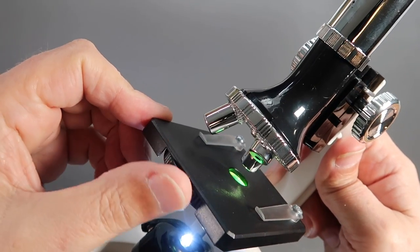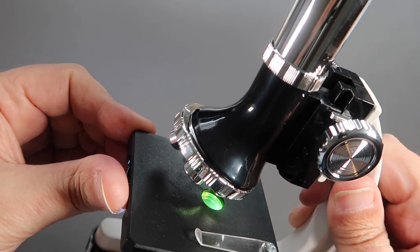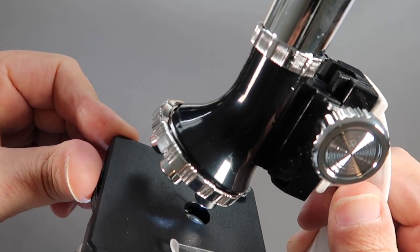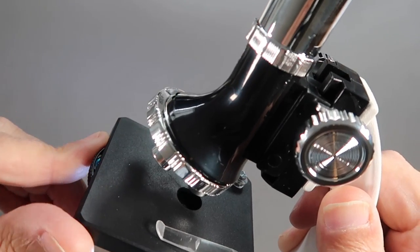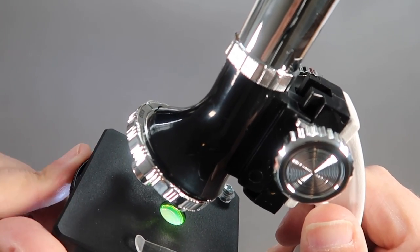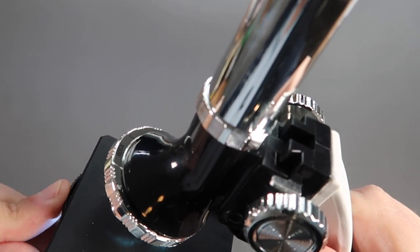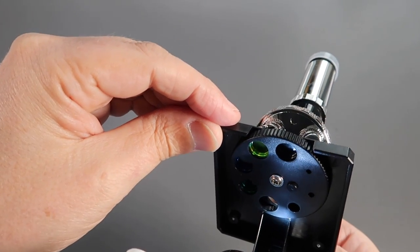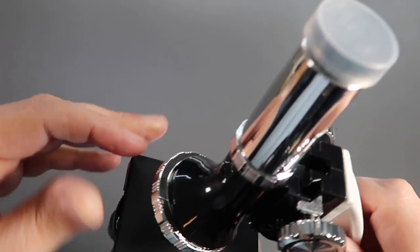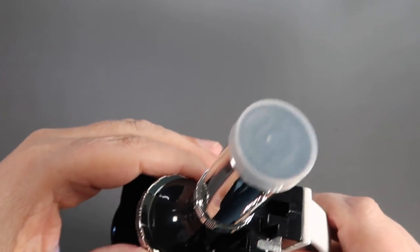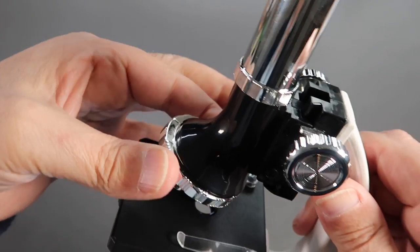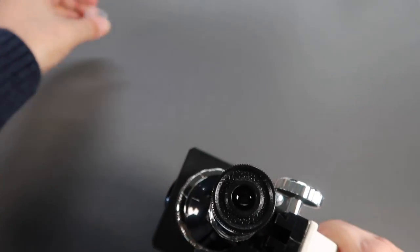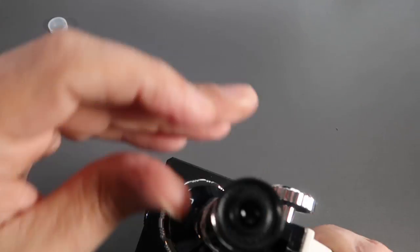This slider on the front of the stage alters a colour filter, which you can probably just see there in the stage. There's a green and a blue. And then of course the dial on the front here is the magnification, which multiplies the magnification of the eyepiece. This is 6 times.